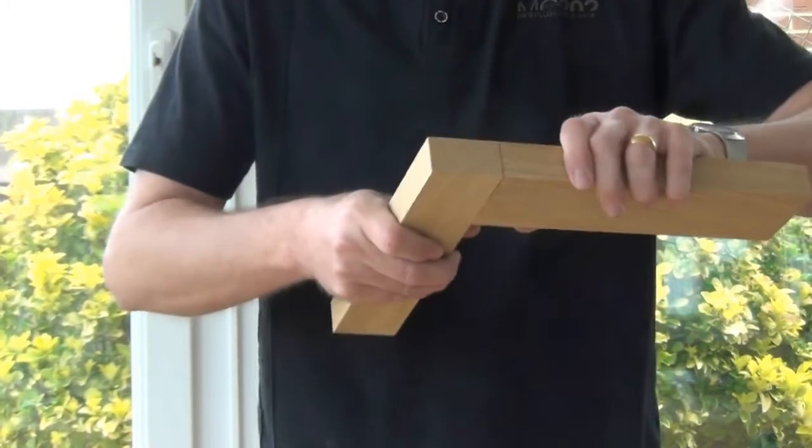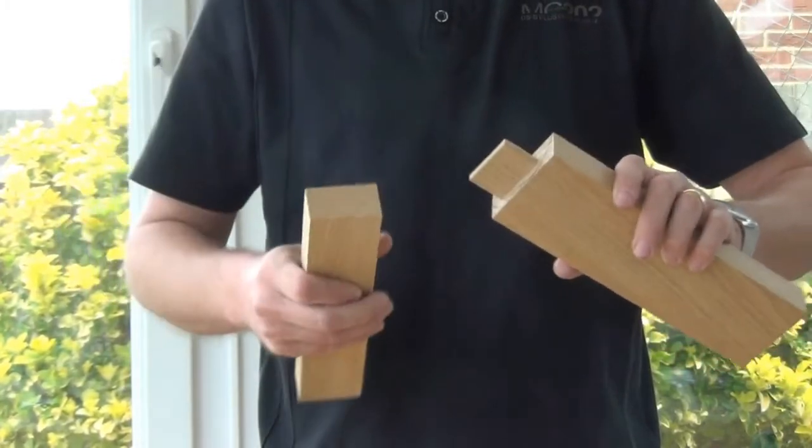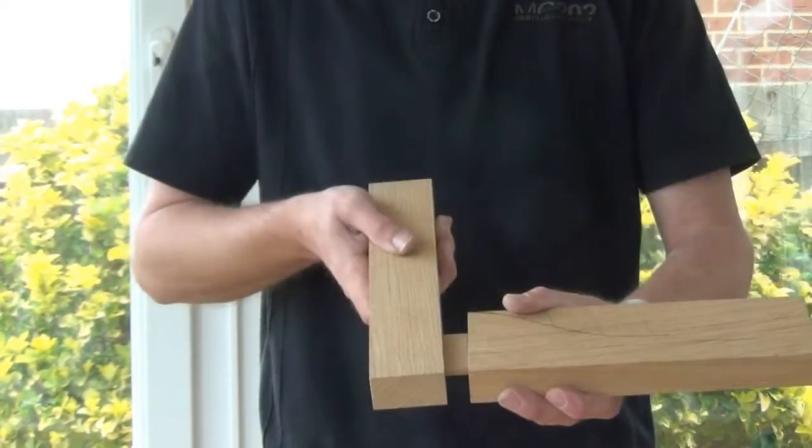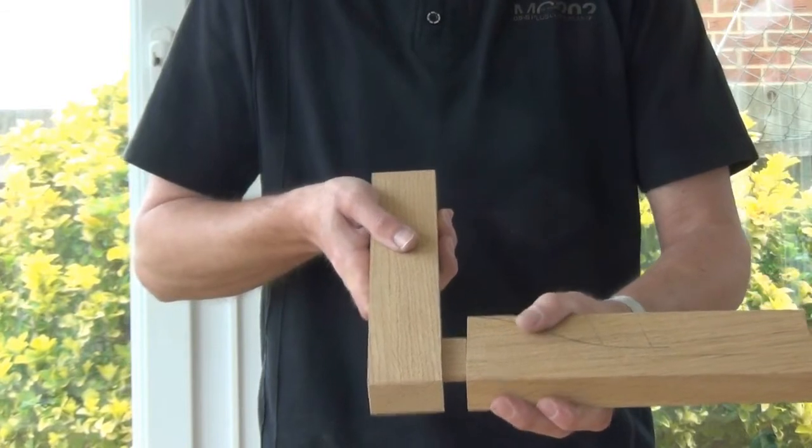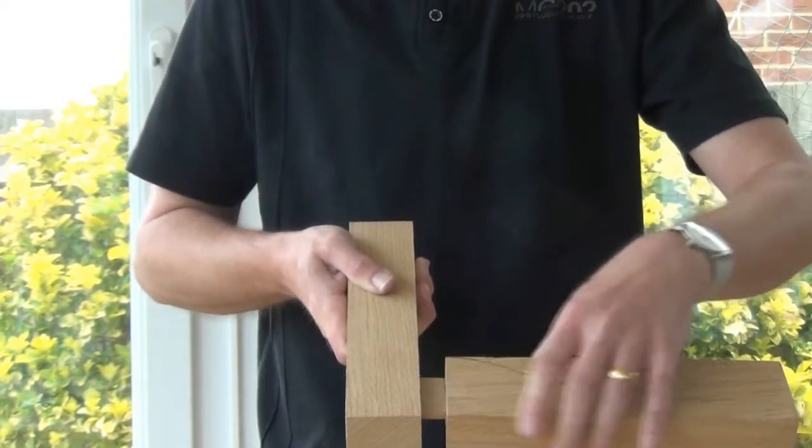It's very strong, there's good glue surface area on this large tenon, and mechanically the joint can't move along itself because of the ends of the tenon butting up to the ends of the mortise.